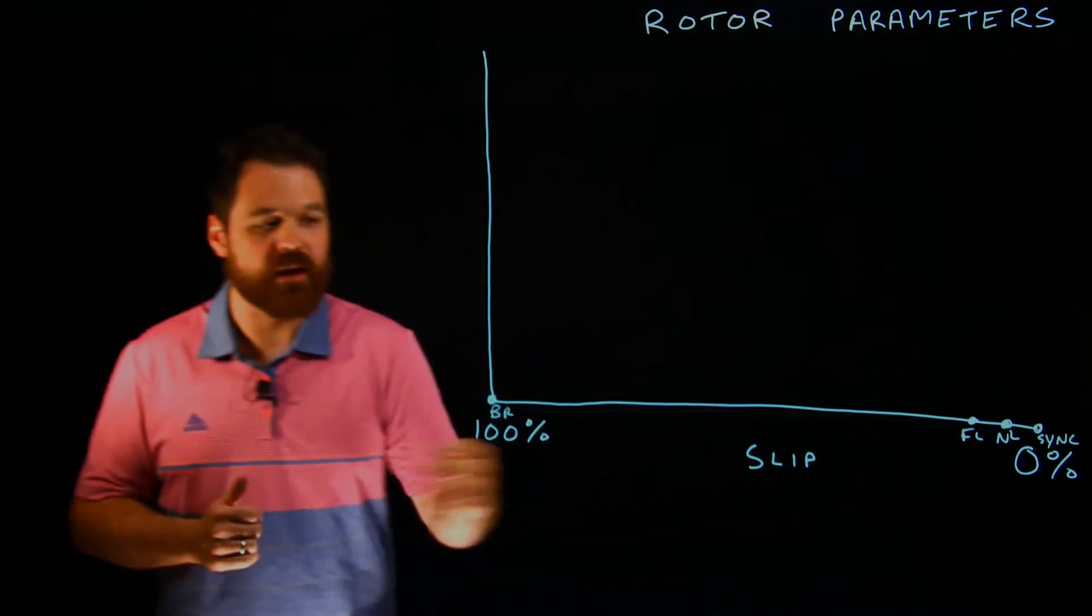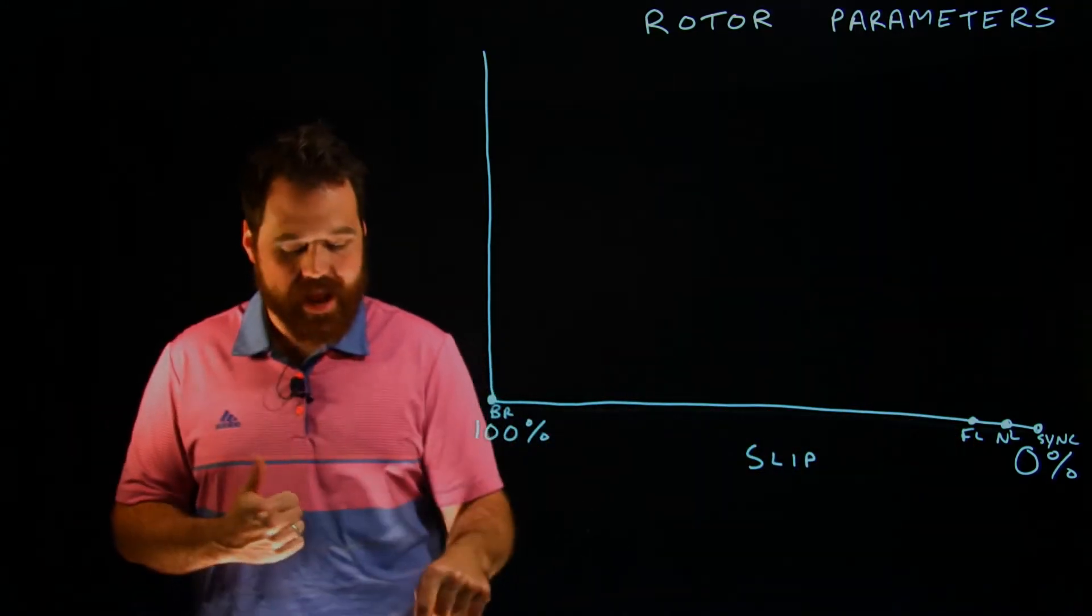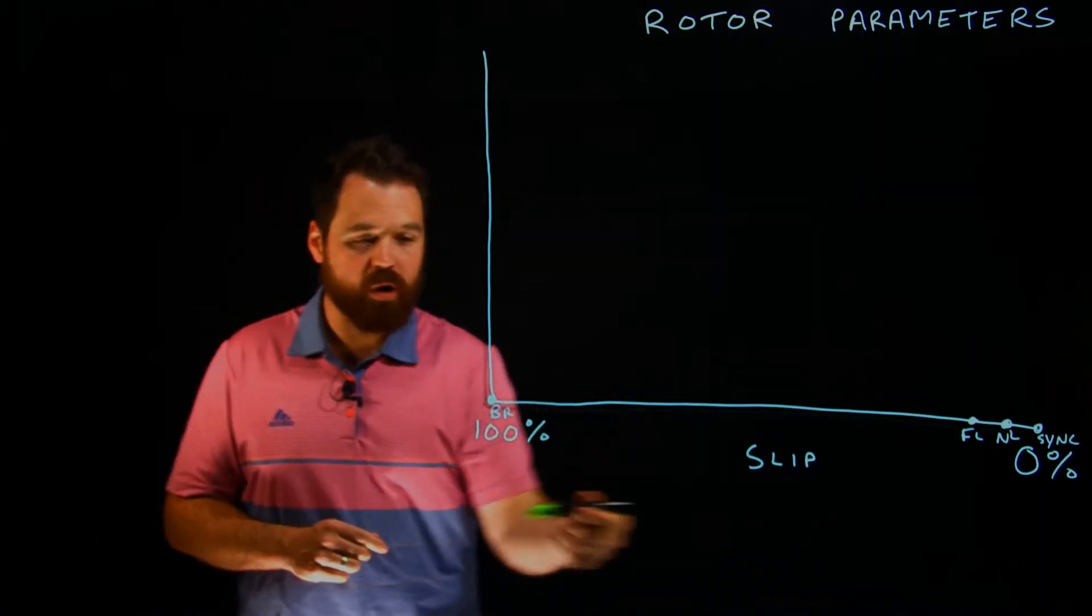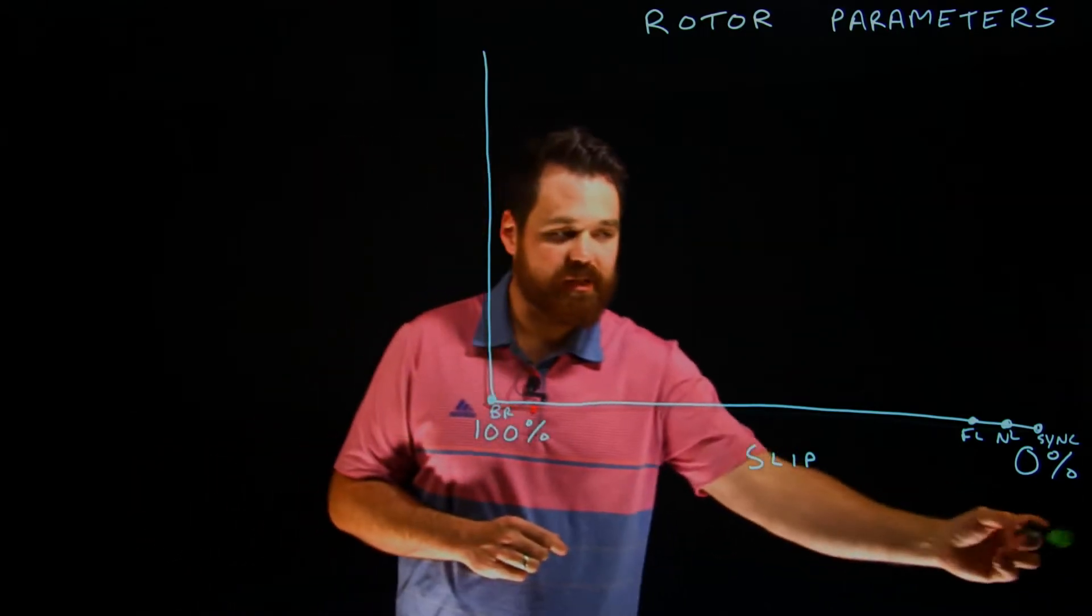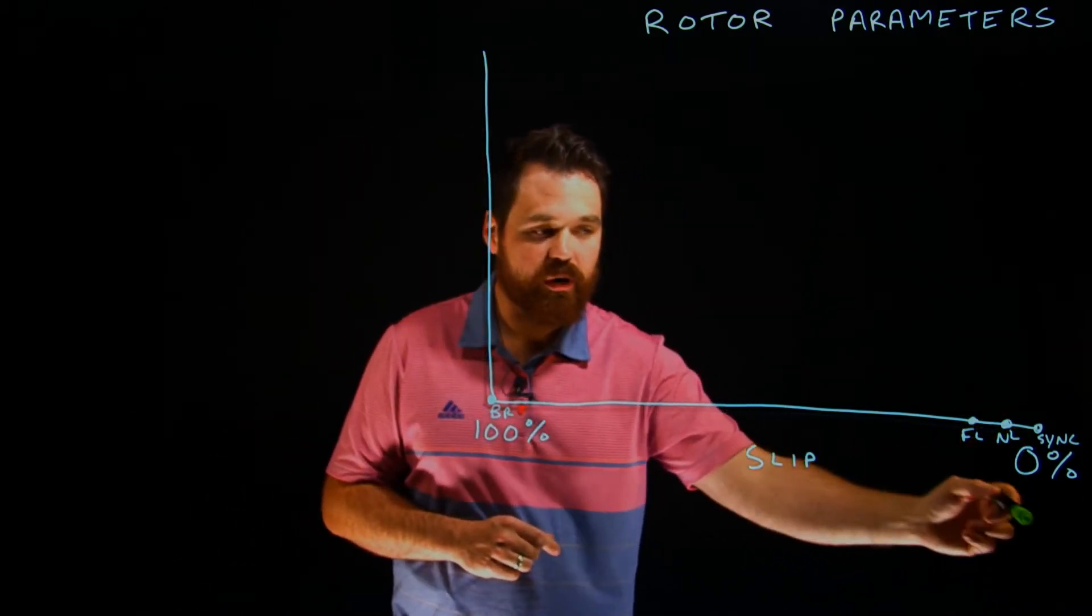So that's our slip as we kind of travel down. As you would add load, you would have more load down here and then less load over here, with our no load and our synchronous speed.